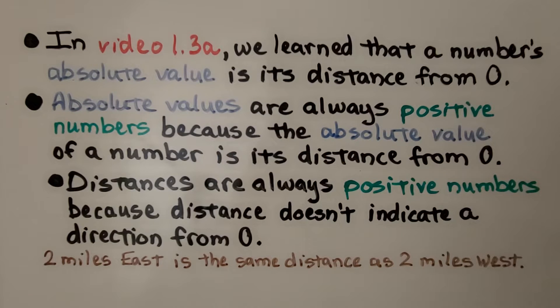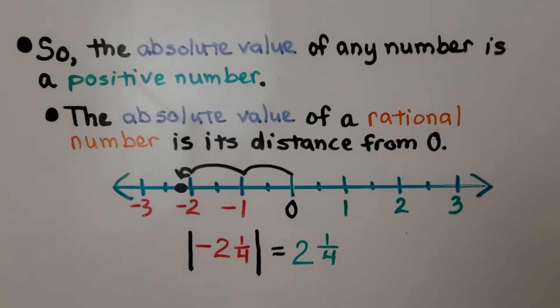Two miles east is the same distance as two miles west — it's two miles. So the absolute value of any number is a positive number.